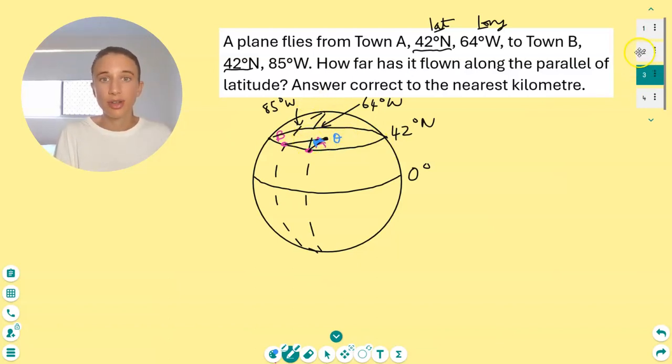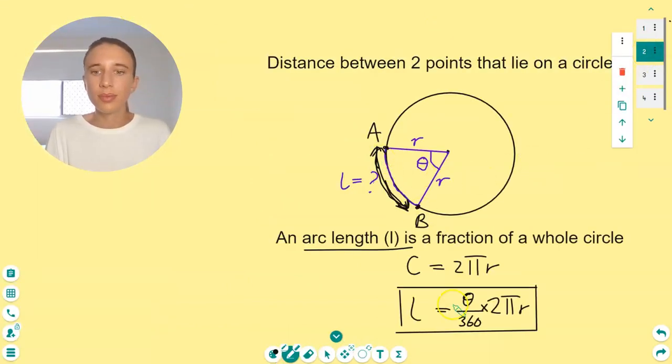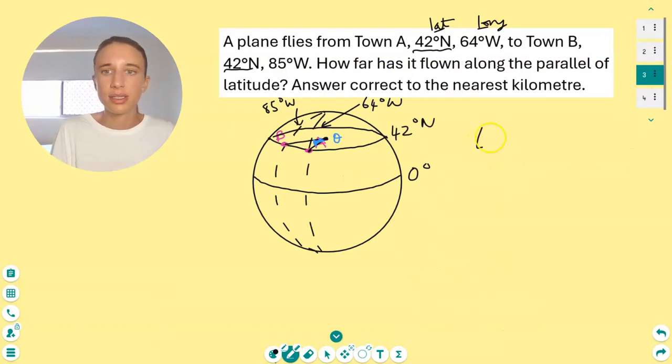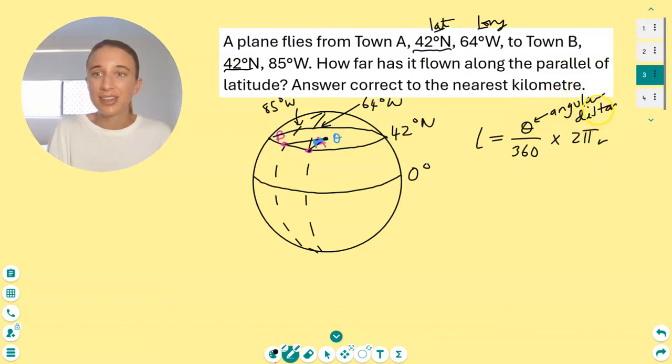Now what do you think that that angle, how do we find that angle? And why do we need to find it first? Well, let's first write down this arc length formula from before. L equals θ/360 times 2πr. Now when it comes to earth geometry, that theta is the angular difference, the angular distance. Sorry, but I remember it as angular difference. And it's the difference in the ones that aren't the same, if that makes sense.